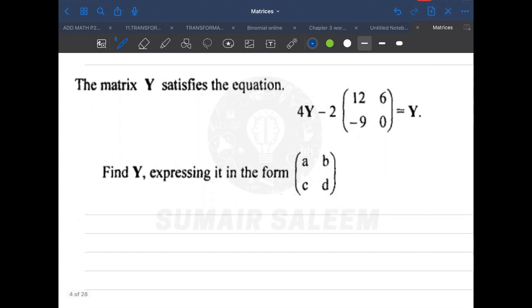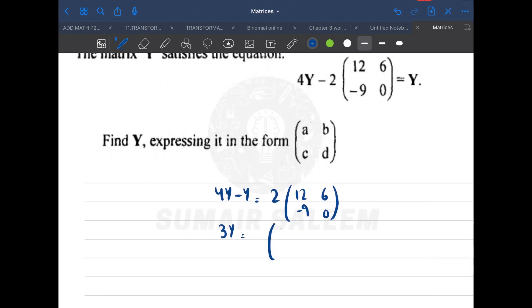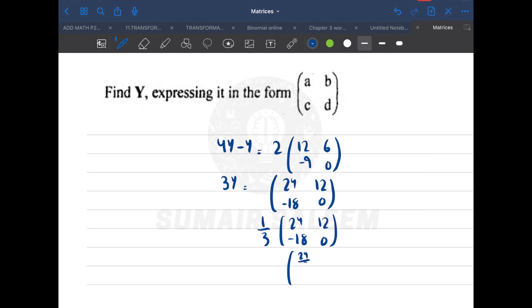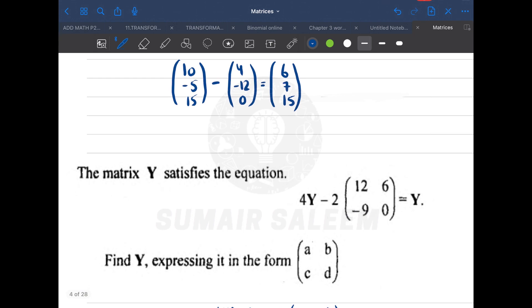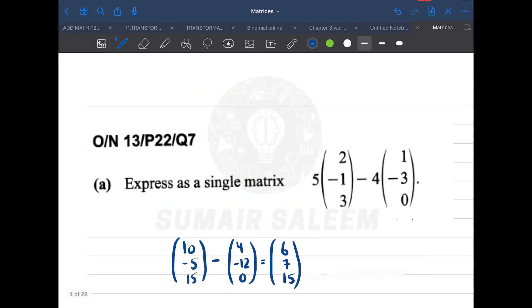This is one last question we'll be doing. We need to find y. In this question, I'm going to write 4y minus y, and let's shift this matrix on the other side. So now it's going to become 3y equals 2 times 12 is 24, -18, 12, and 0. Now let's divide by 3. So my final answer will become 24 upon 3, 12 upon 3, -18 upon 3, and 0 upon 3. That's going to be 8, -6, 4, and 0. I hope you are clear with order of the matrix, zero matrix, and addition and subtraction.